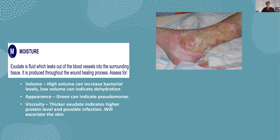A high volume of exudate can increase bacterial levels, while a very dry wound may indicate dehydration. The colour matters — a greenish colour, sometimes almost bright green, can indicate Pseudomonas, which has a particular odour. If you leave a damp dishcloth on the side for a few days, it gets slimy and smells — that's often Pseudomonas. The viscosity of exudate also matters: the thicker it is, the higher the protein level, especially in people with chronic oedema and lymphoedema. High protein exudate can indicate infection and will excoriate the surrounding skin.